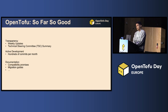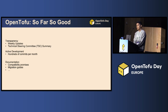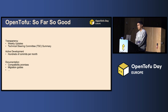The documentation is also thorough, including compatibility promises, migration guides, and many other useful resources. If I were to ask why users should switch to OpenTofu, license must be one of the top factors. But can we expect more?